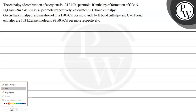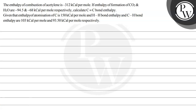Hello Bachcho, let's read this question. The enthalpy of combustion of acetylene is minus 312 kilocalorie per mole. The enthalpy of formation of CO₂ and H₂O are minus 94.5 and minus 68 kilocalorie per mole respectively. Calculate the C triple bond C bond enthalpy. Given that the enthalpy of atomization of carbon is 150 kilocalorie per mole, the H-H bond enthalpy is 103 kilocalorie per mole, and the C-H bond enthalpy is 93.5 kilocalorie per mole.